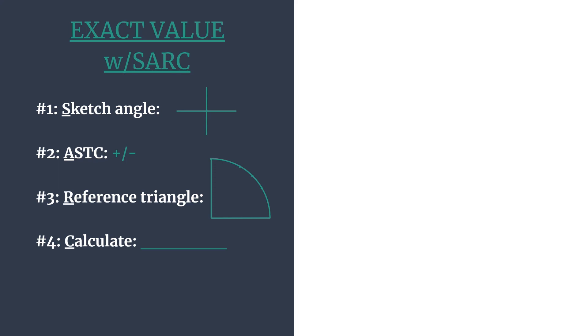R stands for reference triangle, so we'll find the reference angle and then the special right triangle and coordinates that go with that. And C is for calculating the trig ratio. We'll do that for the cosine of 420 degrees.